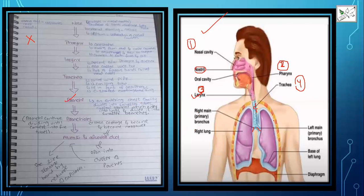Now the fifth part is the bronchi. When the bronchi enter the chest cavity, they are two smaller tubes. They further divide into smaller branches inside the lungs. The bronchi contain cartilage. As they become narrower, they divide into finer tubes called bronchioles.